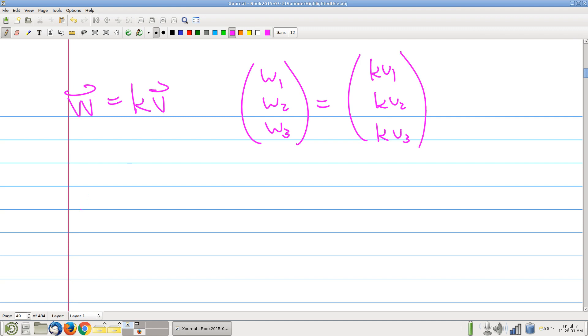Now let's compute the cross product V cross W. That's the symbolic determinant. The coordinates of V are V1, V2, V3, and the coordinates of W are KV1, KV2, and KV3. Now let's write down what we get.